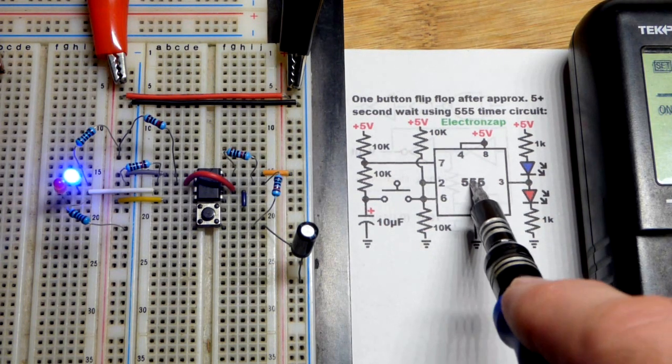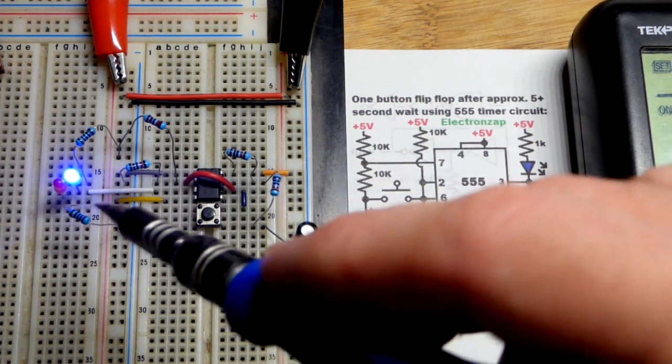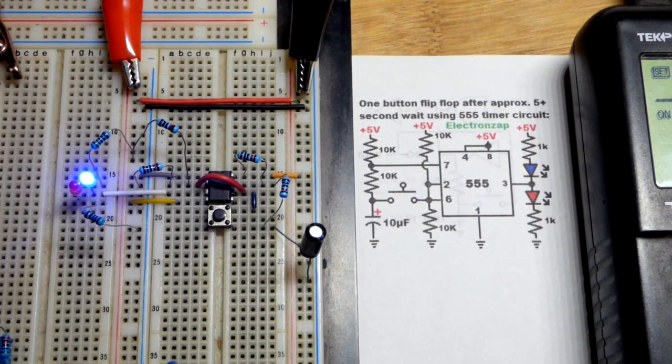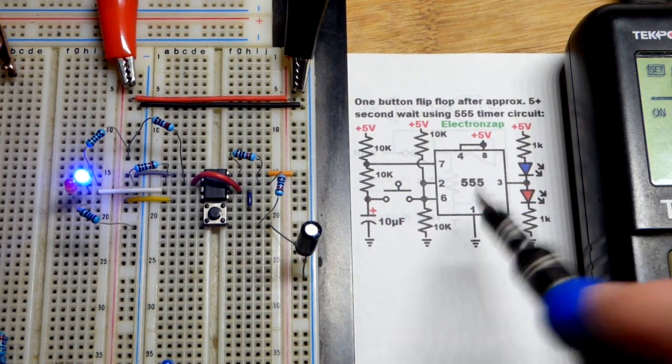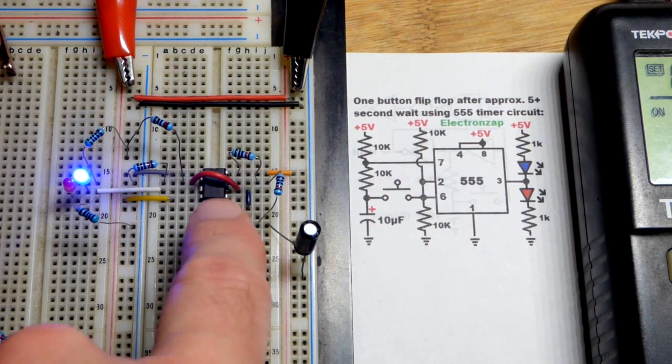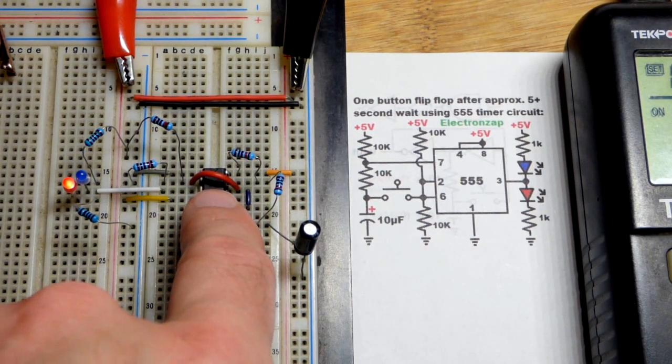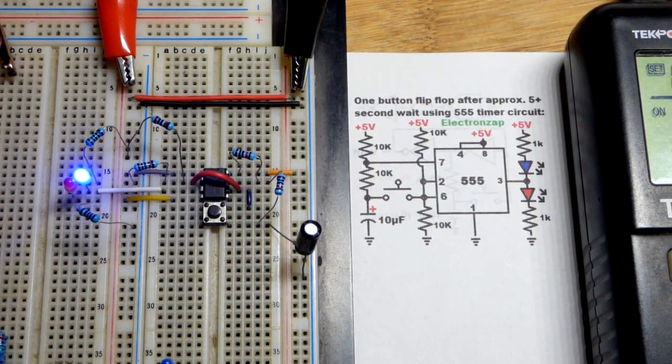So now in this video we have a 555 timer. I bumped the power supply, that's why the LED went off briefly. But in any case, we have it wired as a flip-flop. But there's only one button to this flip-flop. Generally there's two buttons for the 555 timer flip-flop.